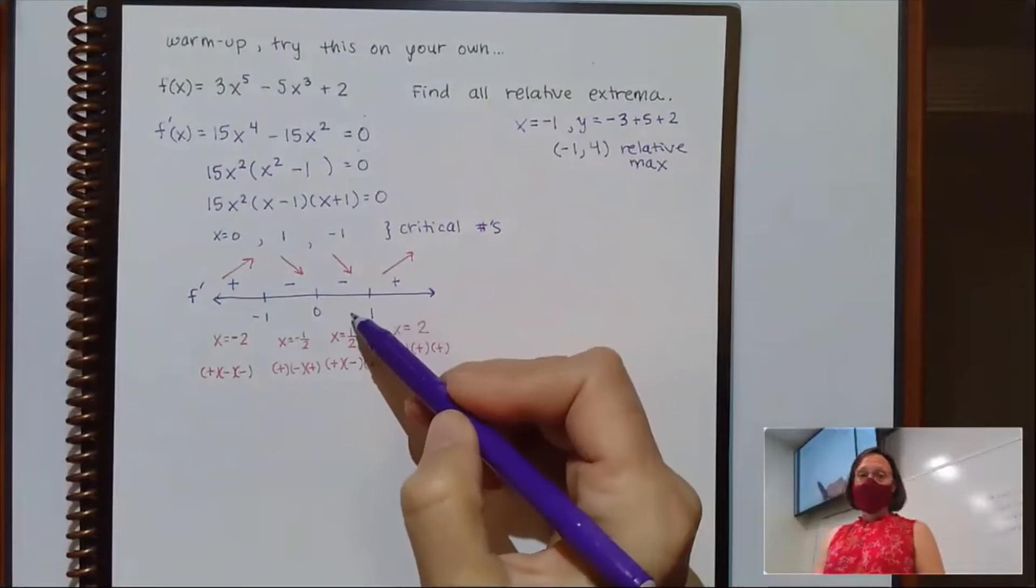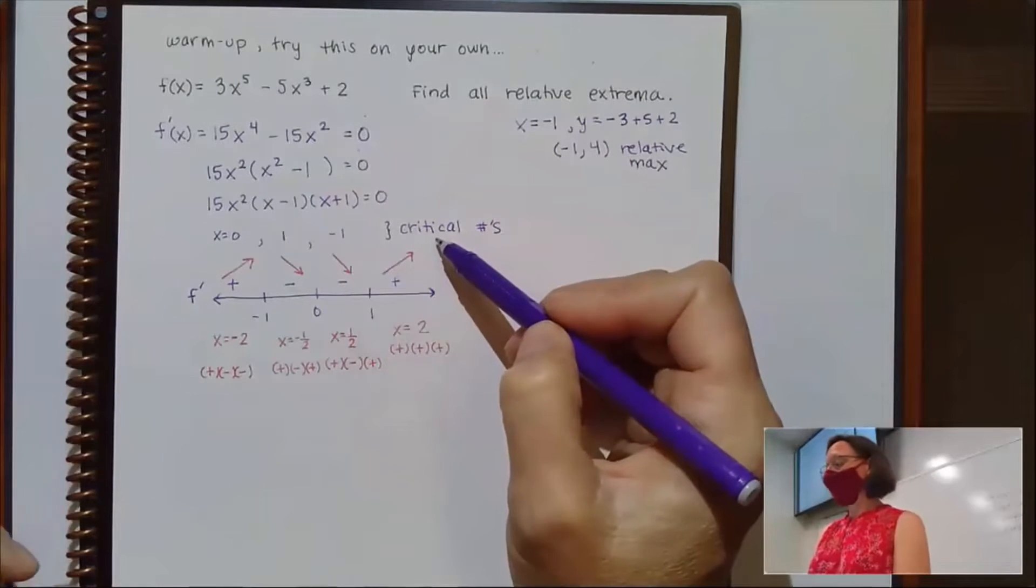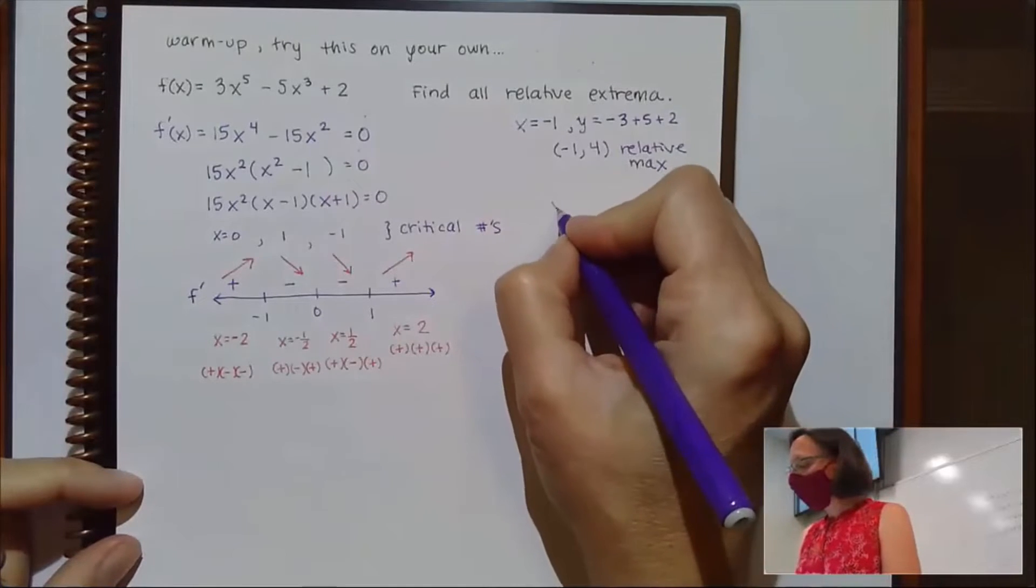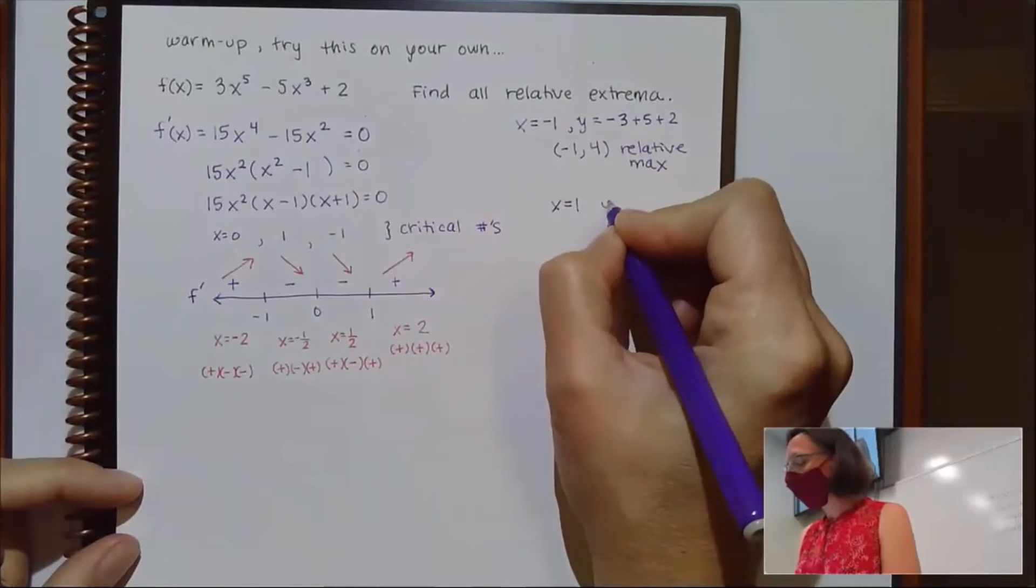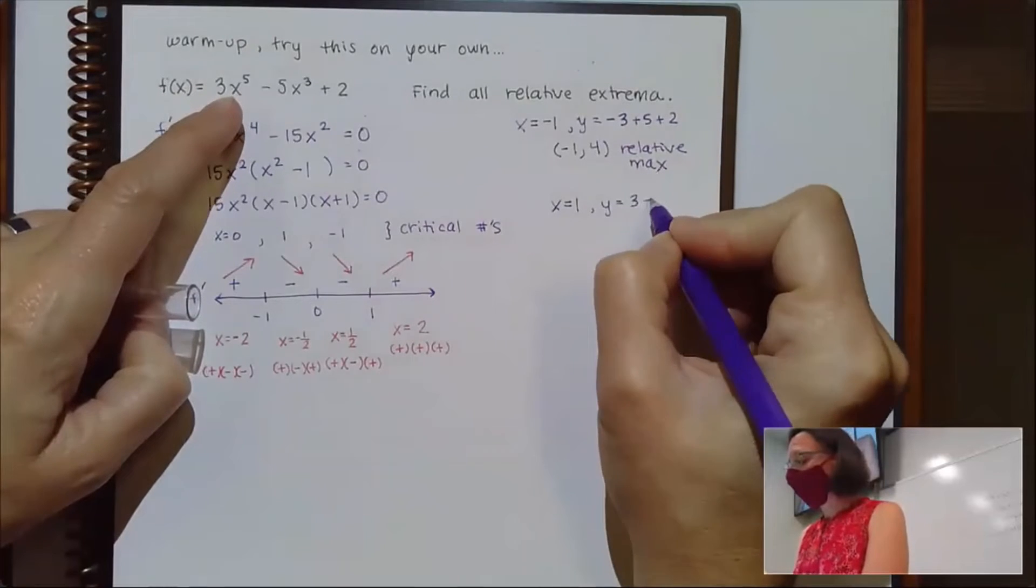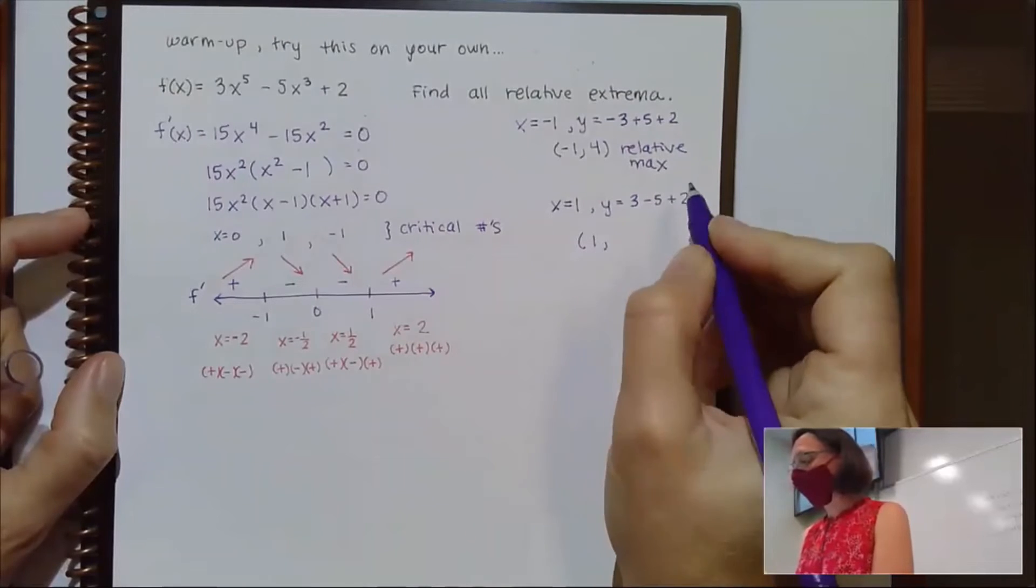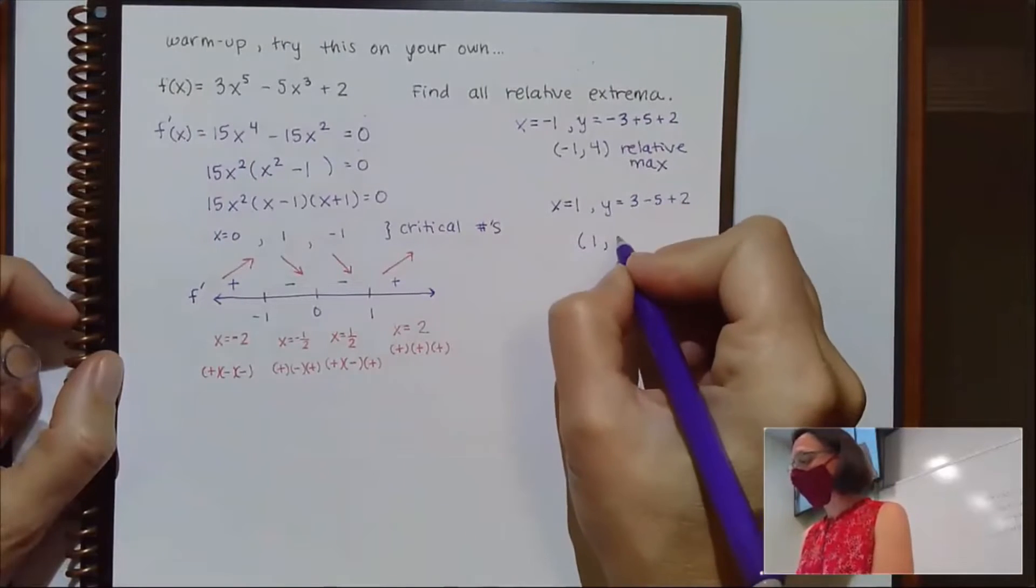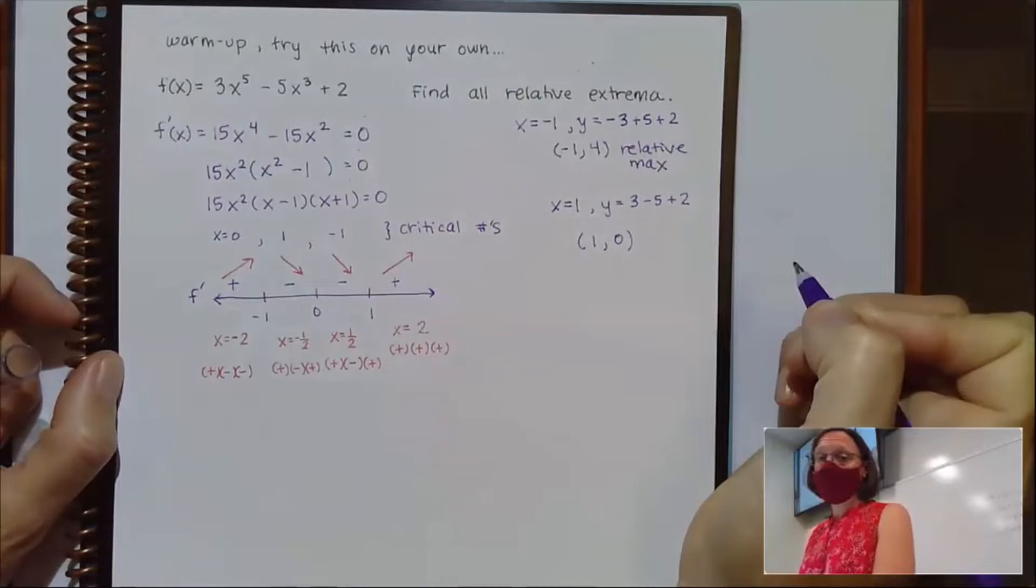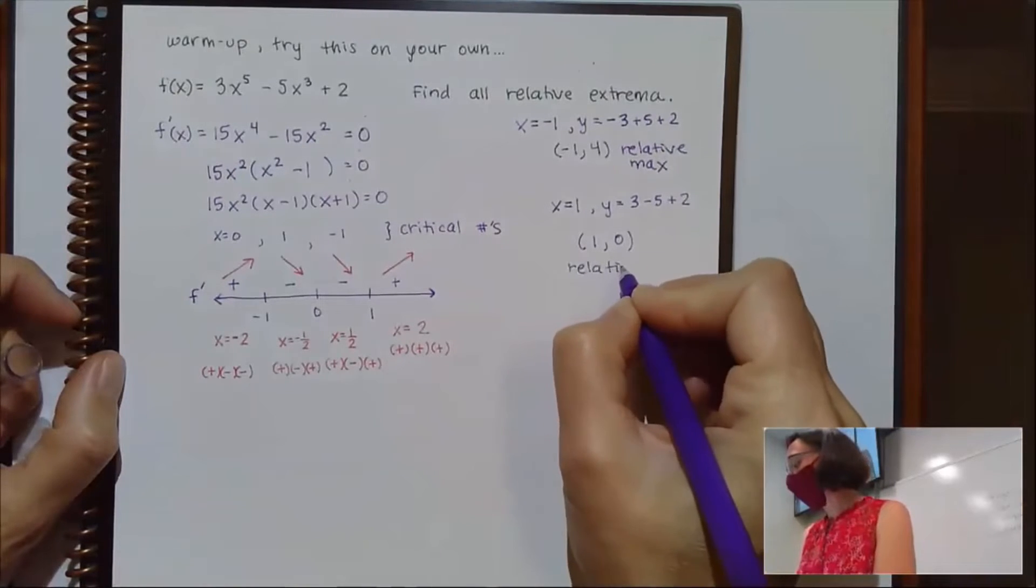And I'm going to list that as a relative max. Now for the coordinate of 1, for the x coordinate of 1, I was going down and then back up again. So that must have been a relative minimum. So when x equals 1, if I go to plug that back in into the y, I'm going to have 3 - 5 + 2. Or coordinate of 1, comma, that's a 0. And that would be my relative min.